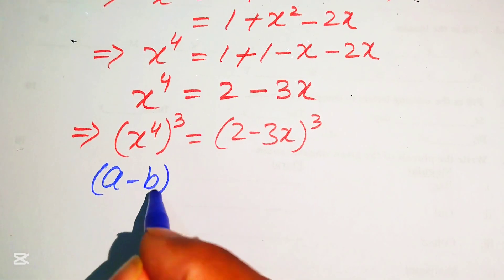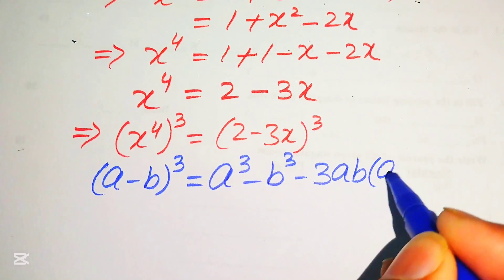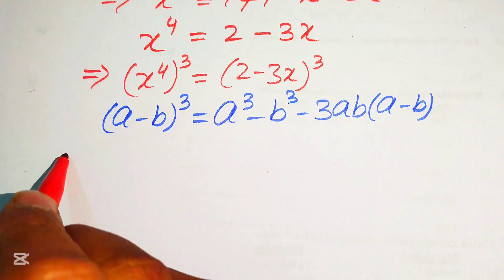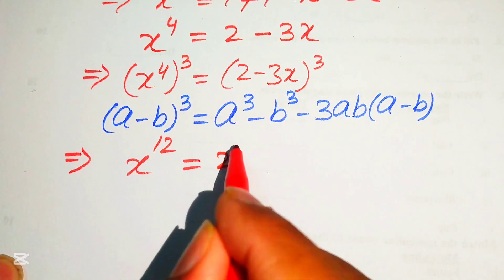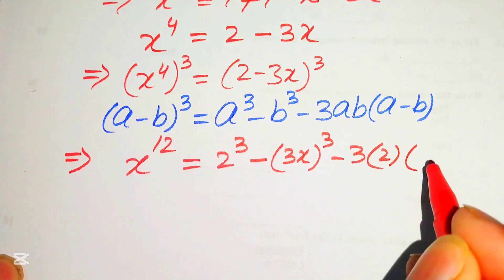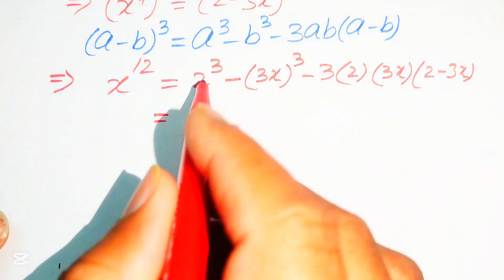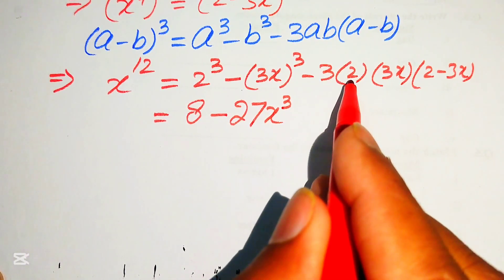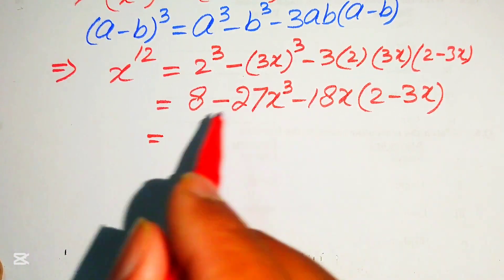We apply the cubic formula: (a − b)³ = a³ − b³ − 3ab(a − b). With a = 2 and b = 3x: x¹² = 2³ − (3x)³ − 3(2)(3x)(2 − 3x) = 8 − 27x³ − 18x(2 − 3x).